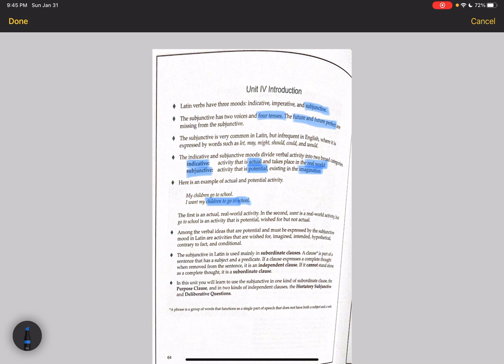So in that case, we would use the subjunctive in the Latin. Among the verbal ideas that are potential and must be expressed by the subjunctive mood in Latin are activities that are wished for, imagined, intended, hypothetical, contrary to fact, and conditional. So these are some of the kinds of actions that have to happen in the subjunctive mood in Latin.